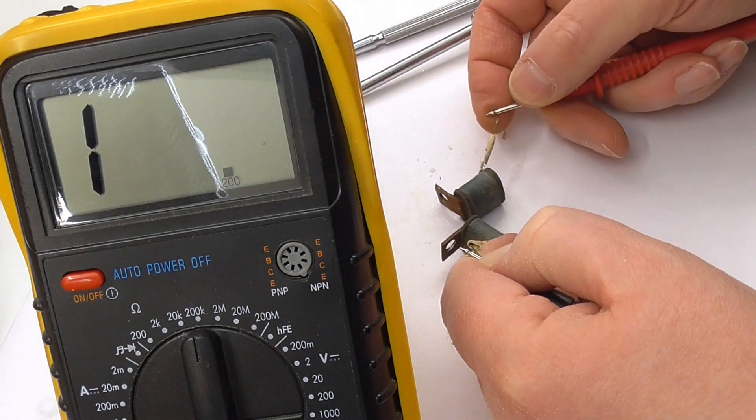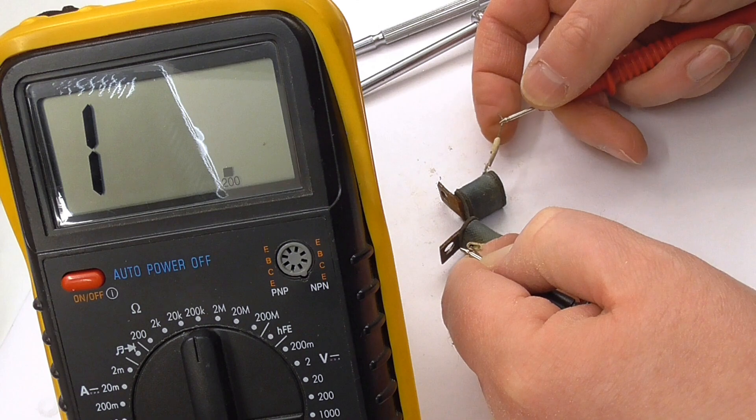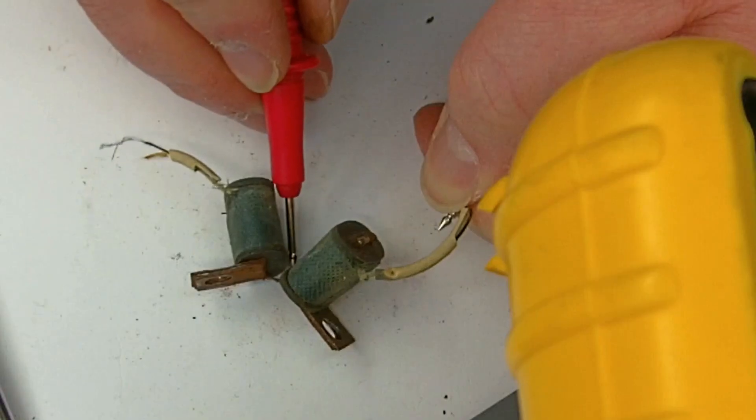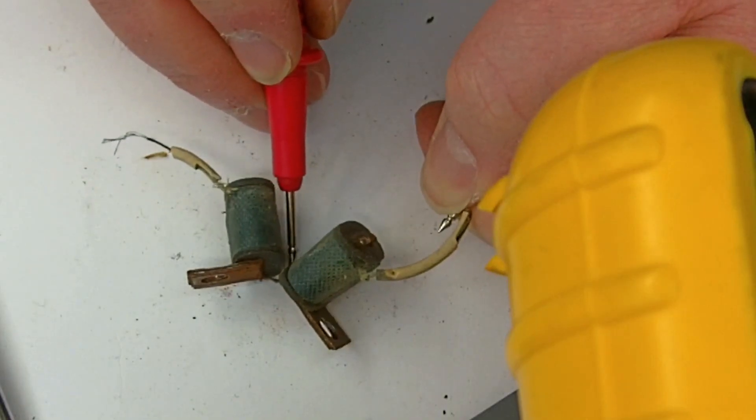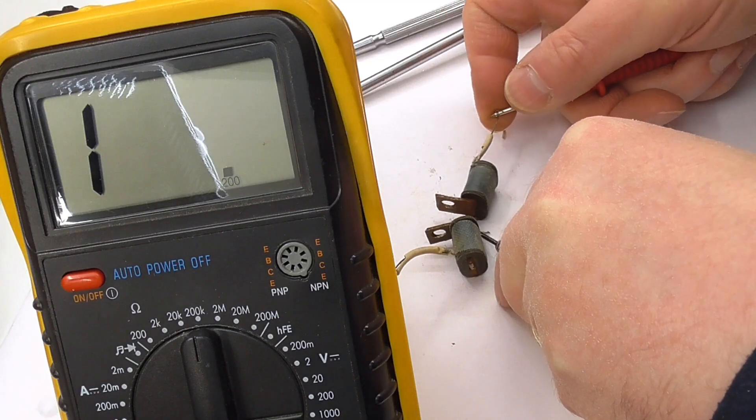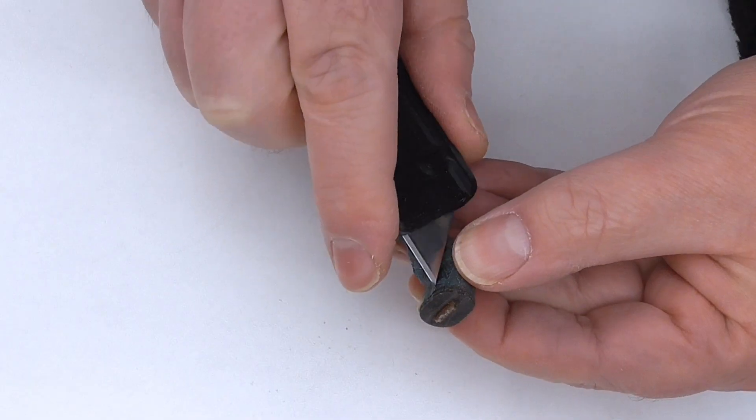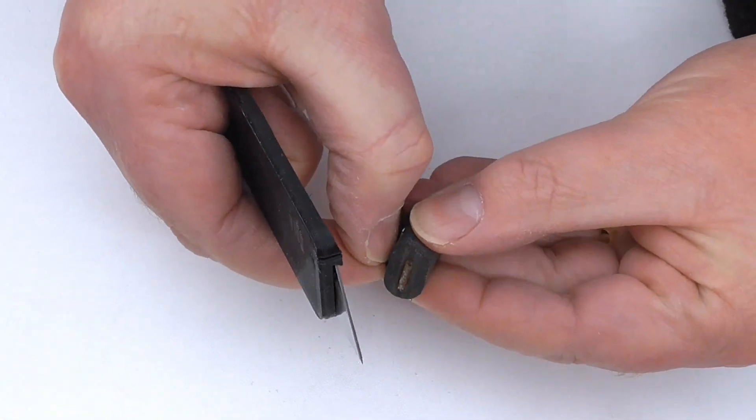I'm checking the coils together as a pair, but also individually. Both are open circuit unfortunately. The only option is to take off the old wire and wind on some new stuff.